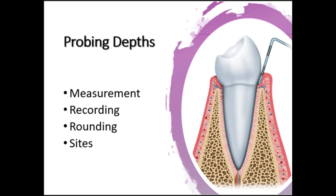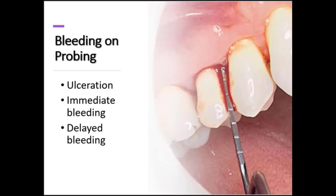In an inflamed pocket that's not always possible, but we should strive to keep our pressure adequate without overdoing it. Measurements should always be rounded to the nearest millimeter, and we always round up to the next whole number — for example, if we probe a 3.5 we're going to round this up to a 4. We probe six sites for each tooth.